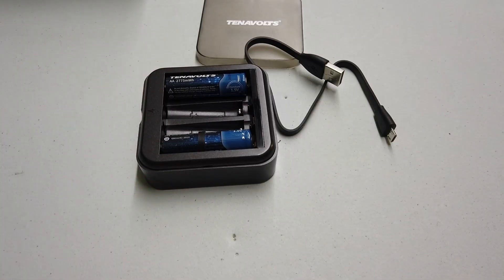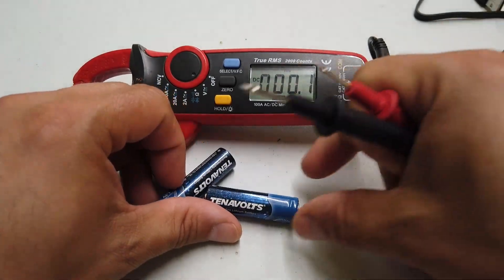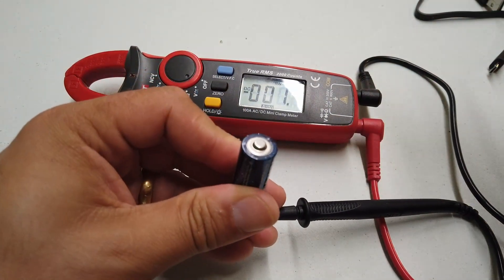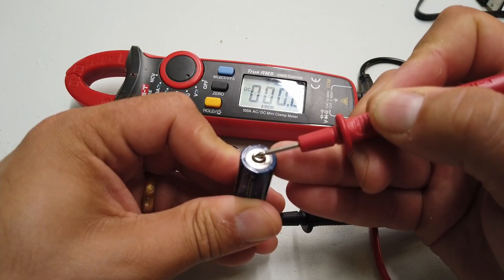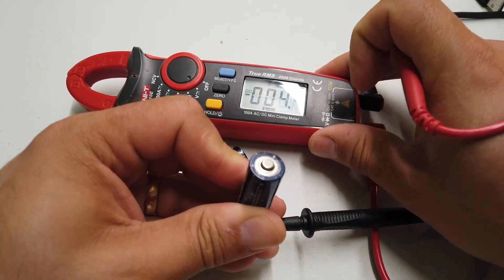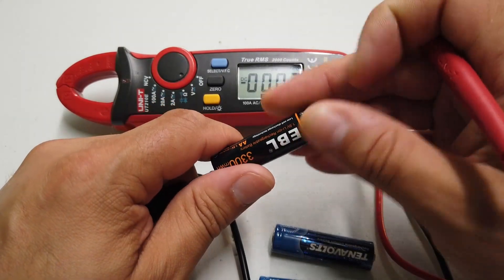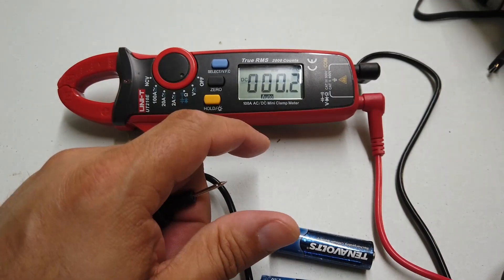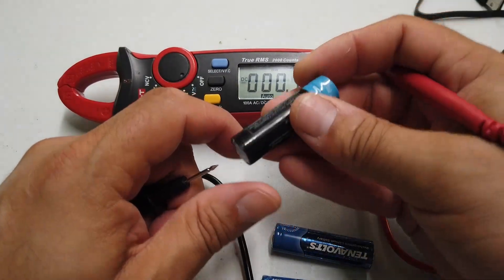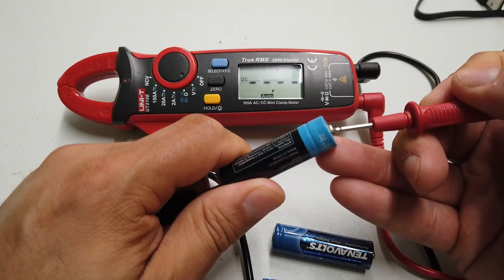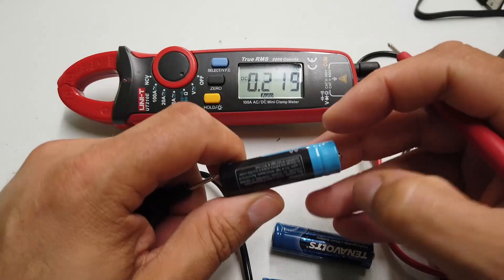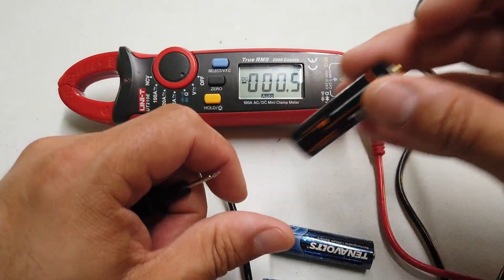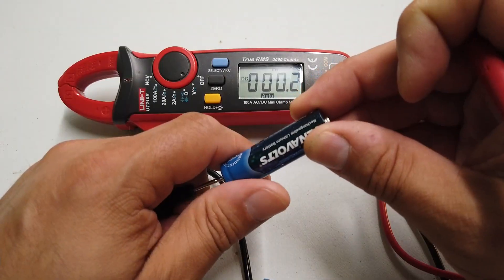During testing, it's a shame to know that one of these Tenovolts decided it was going to stop working. Let's have a look. This one is producing zero volts. When we grab an EBL, 1.5 volts. And let's grab a Kratax, 1.5 volts. So Kratax seem to be holding up, EBL seem to be holding up, but Tenovolts after two charges have just stopped working.